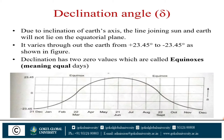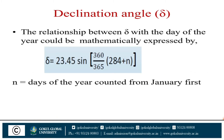The declination has two zero values, which are called equinoxes, meaning equal day. The relation between the declination angle and the day of the year can be mathematically expressed. The most important equation is: δ = 23.45 × sin[360/365 × (284 + n)], where n is the day of the year counted from January 1st.